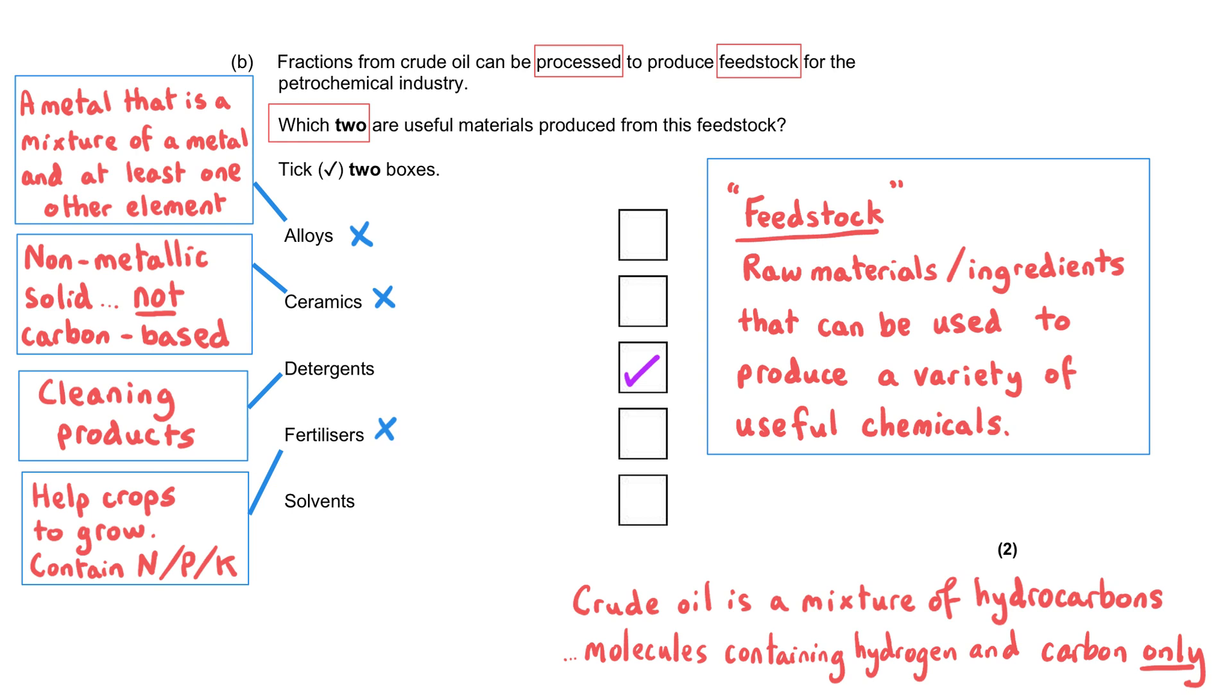And that means that the last answer, solvents, must be the second correct answer. And it is. Solvents are used to dissolve things. And the fractions of crude oil are really good at dissolving a certain type of substance, specifically substances that do not readily dissolve in water. So the correct answers are detergents and solvents.